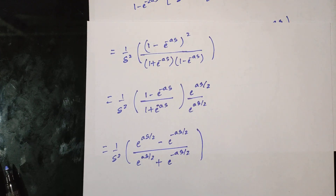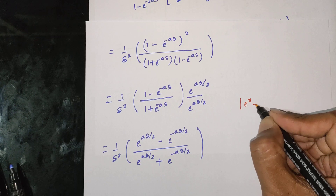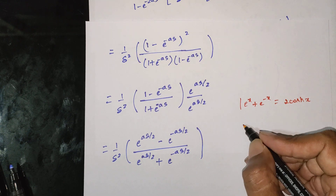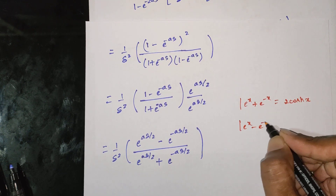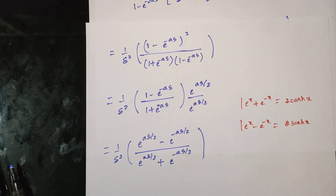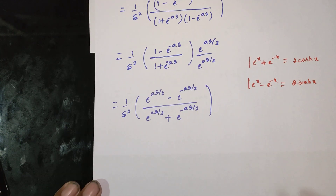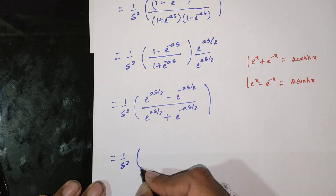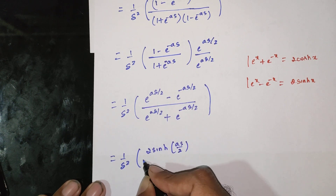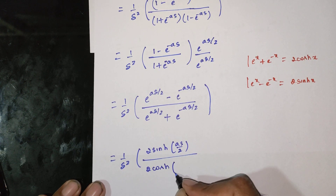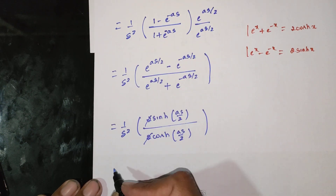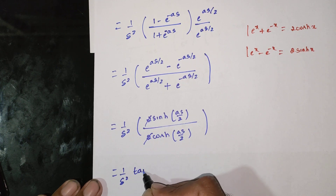Using the hyperbolic function formulas: e power x plus e power minus x over 2 equals cosh x, and e power x minus e power minus x over 2 equals sinh x. Therefore the expression becomes 1 by s squared times 2 sinh(as by 2) divided by 2 cosh(as by 2). The 2 cancels, giving sinh over cosh which equals tanh. The final answer is (1 by s squared) times tanh(as by 2).